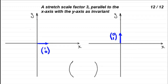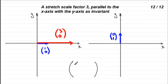Lastly, for number 12, a stretch scale factor 3 parallel to the x-axis with the y-axis as invariant. The vector (1, 0) gets stretched out by a factor of 3, going to (3, 0). For (0, 1), since we're stretching parallel to the x-axis with the y-axis invariant, this stays exactly the same at (0, 1). The matrix has columns (3, 0) and (0, 1).